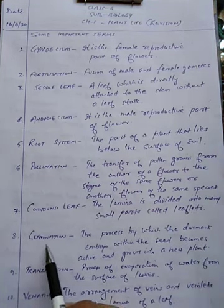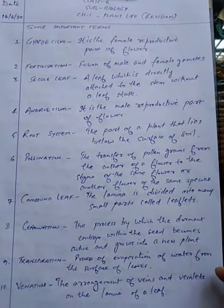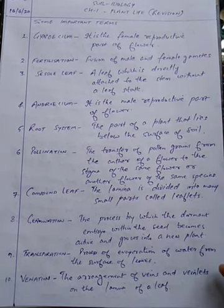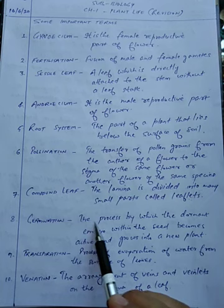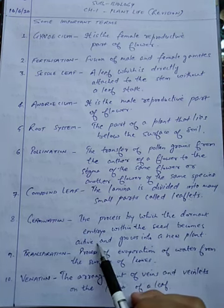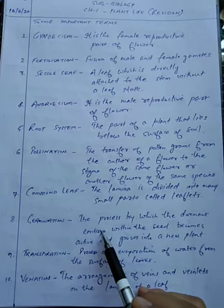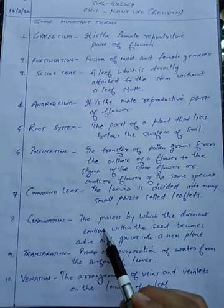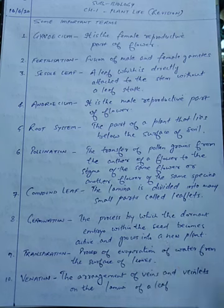The eighth term is germination. If the process of germination is not there, then the seed is not going to germinate and it is not going to develop into a new baby plant. Germination is the process by which the dormant embryo within the seed becomes active and grows into a new plant. Inside the seed there is a tiny plant known as the embryo, and whenever suitable conditions come, that embryo becomes active and grows into a new plant.